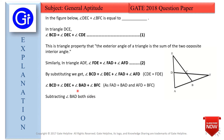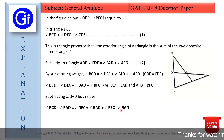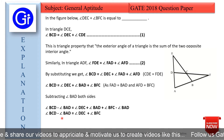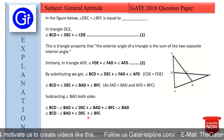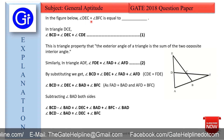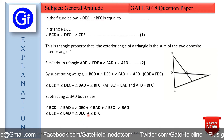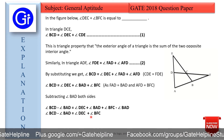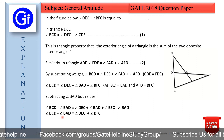Now we subtract angle BAD from both sides. It becomes BCD minus BAD, and this BAD is also subtracted on the other side. So BAD and BAD cancel out, and we are left with angle DEC plus angle BFC. Therefore, angle BCD minus angle BAD equals angle DEC plus angle BFC.